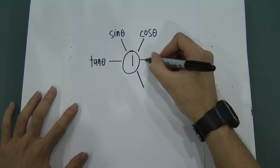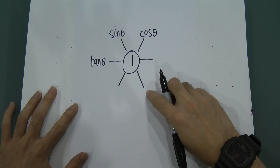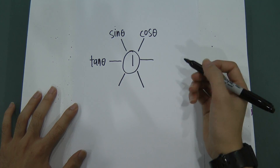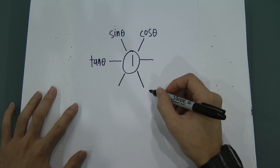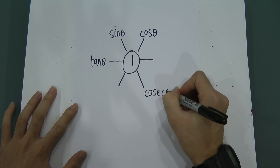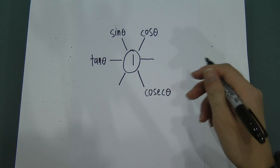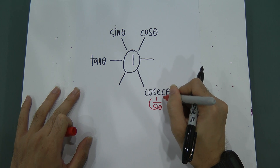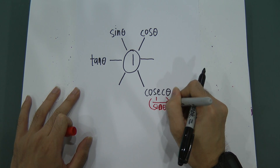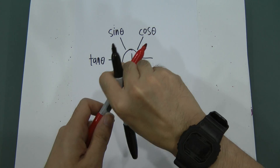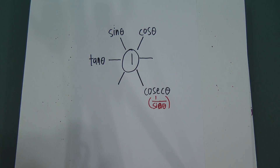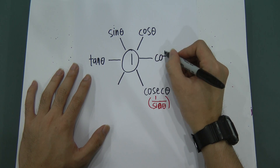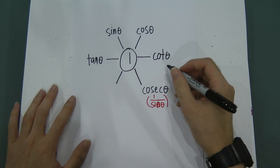Then I draw three more lines. This line is connected to sine, and this is the opposite of sine, meaning one over sine. What do we call one over sine? We call it cosecant angle. And then for this one, this is one over tangent. One over tangent we call cotangent. Cotangent is one over tangent.